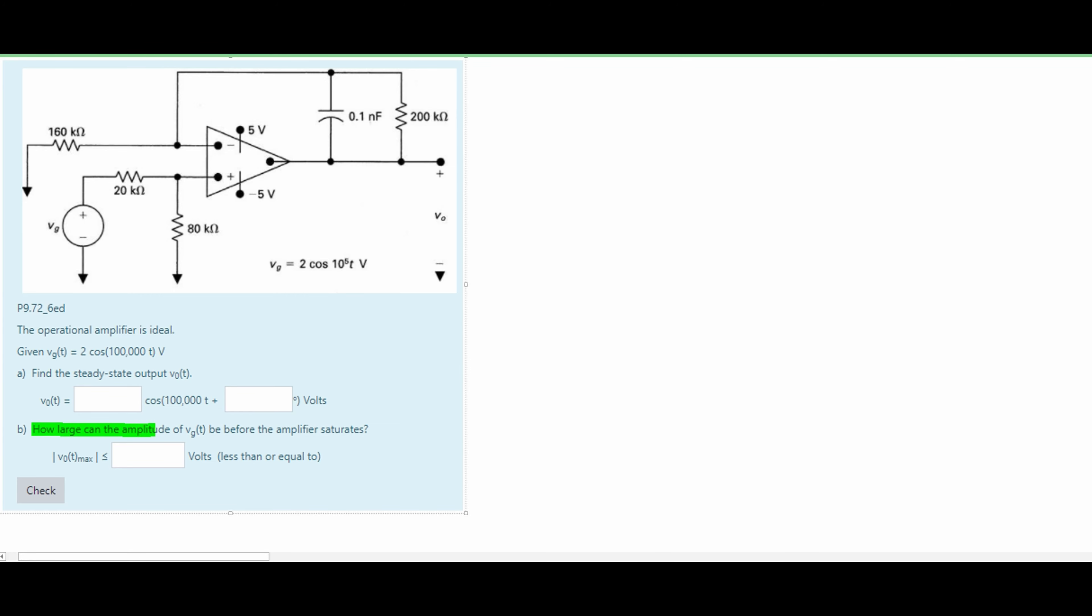We are also asked how large can the amplitude of our VGT be before our amplifier saturates, and we're going to use these max and minimum voltages. But for our part A we're finding the steady state output. This is going to be our V0. We need to make an expression or an equation for this.